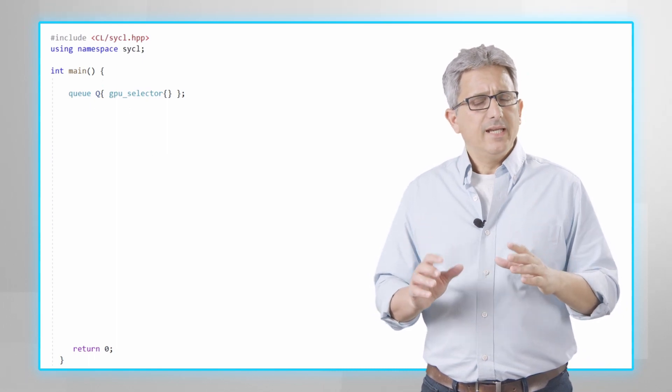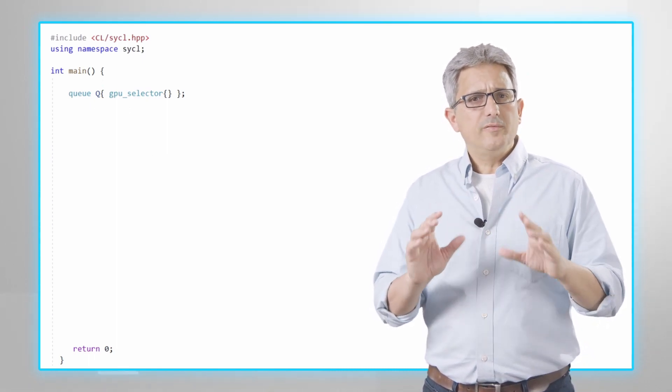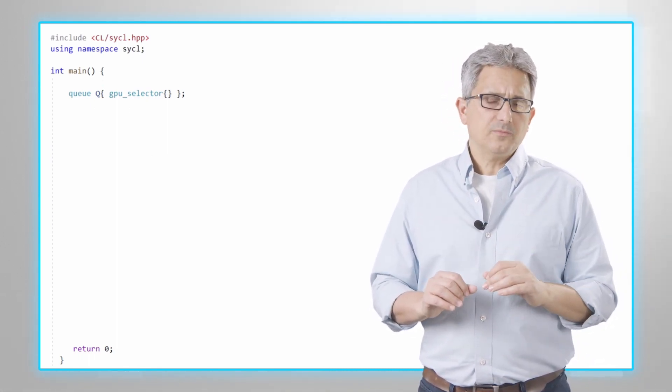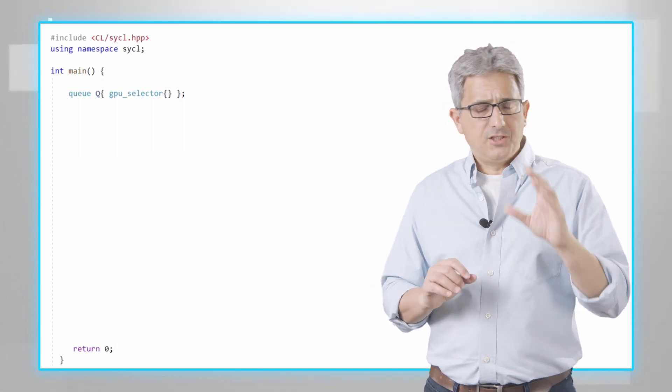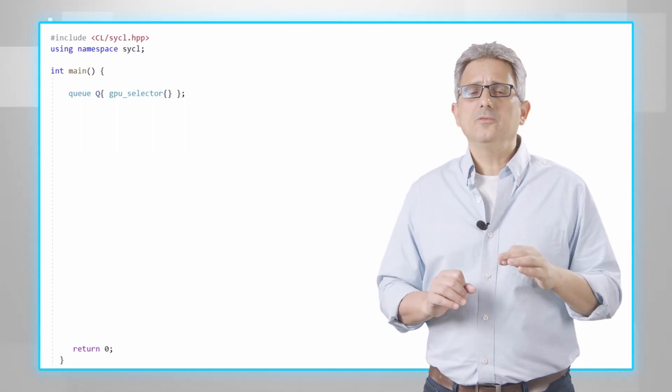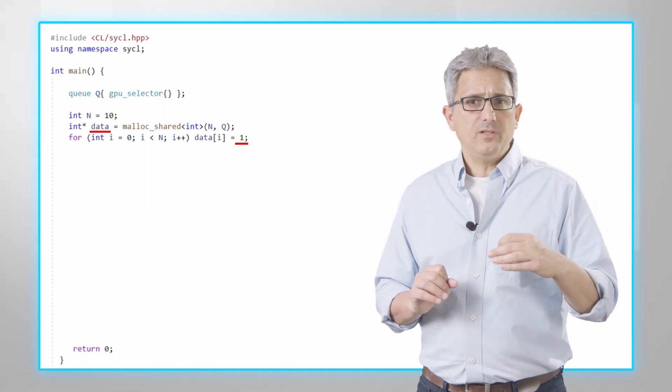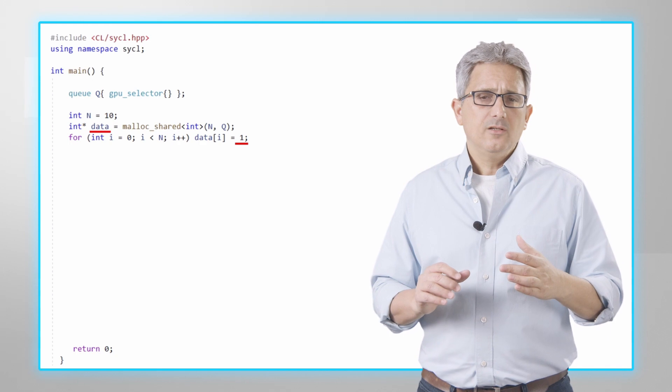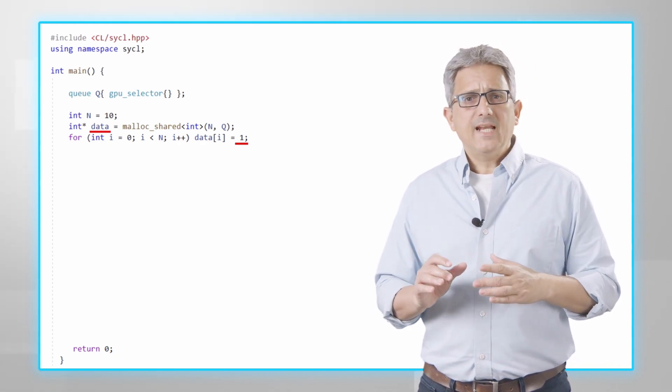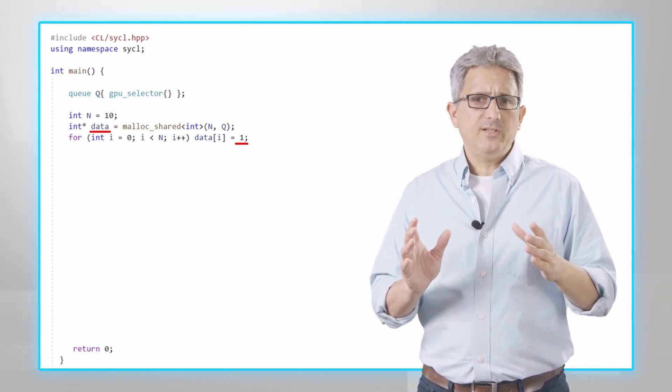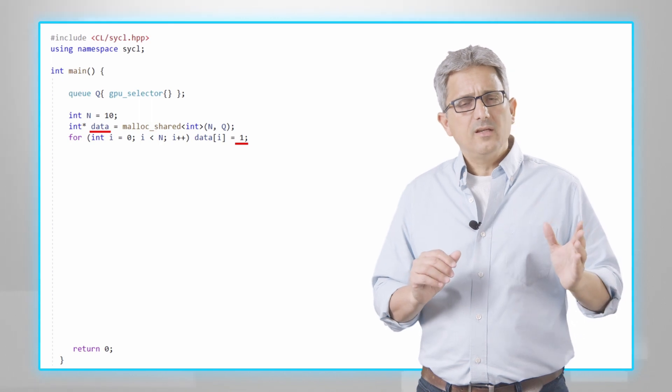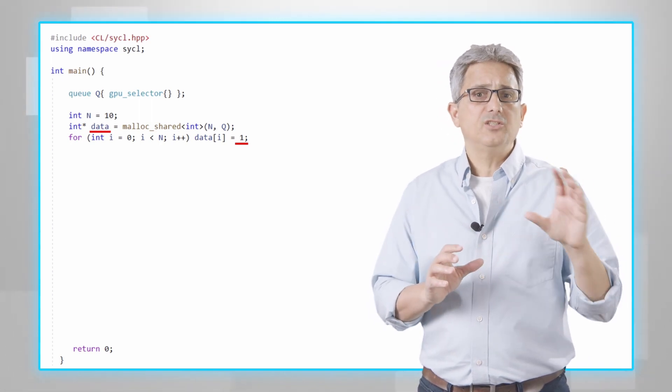A simple example and all the code snippet could be found in the video description. So I have here a queue attached to my GPU and data defined as unified shared memory, an array of size n filled with ones. And I'm using malloc_shared so the memory is shared between the host and the device mapped to this queue.